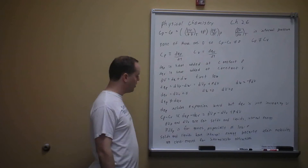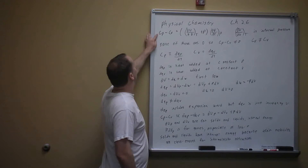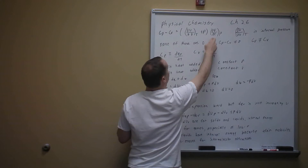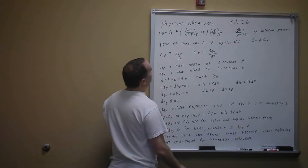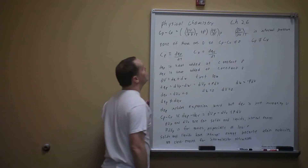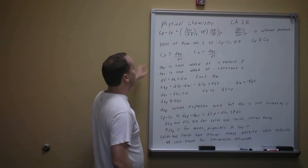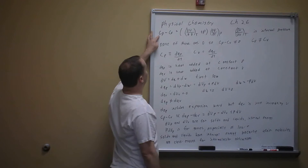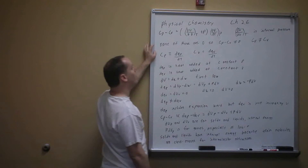We've shown that Cp minus Cv equals (dU/dV at constant T plus P) times dV/dT at constant P. The term dU/dV at constant T has units of pressure and is called internal pressure. Chapter 2.7 will cover how to measure it. Since none of these terms equals zero, Cp minus Cv is not equal to zero, and therefore Cp and Cv are not equal to each other.